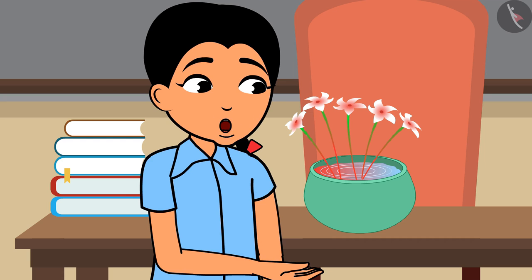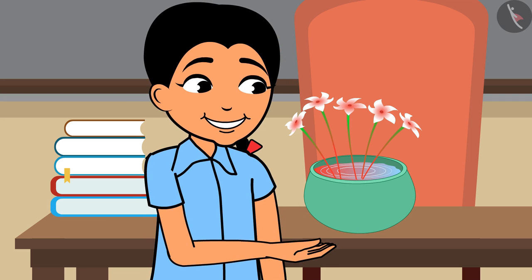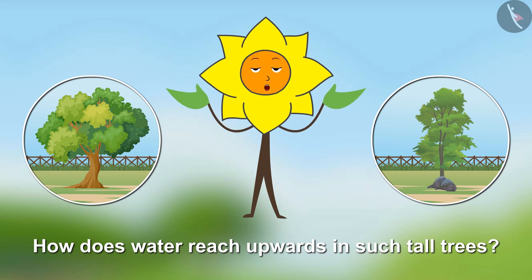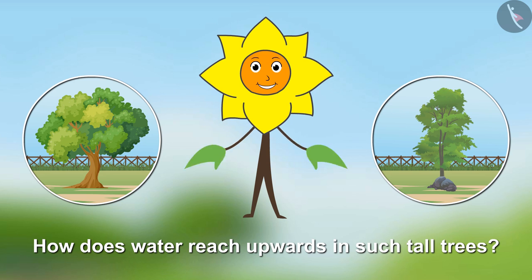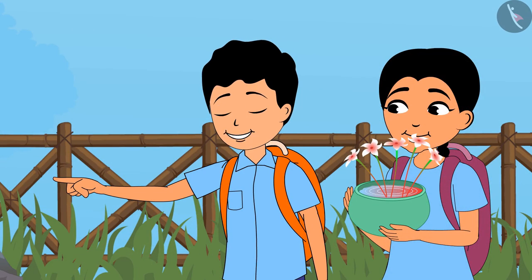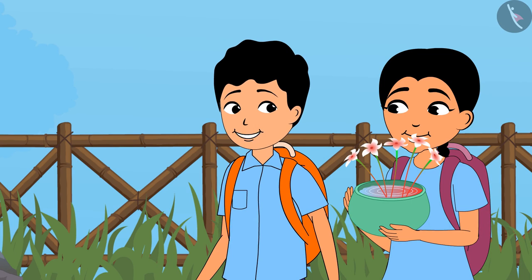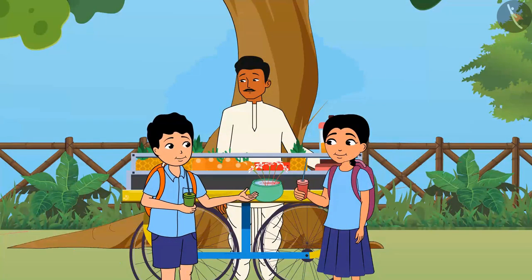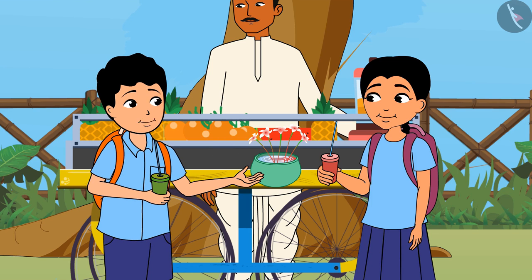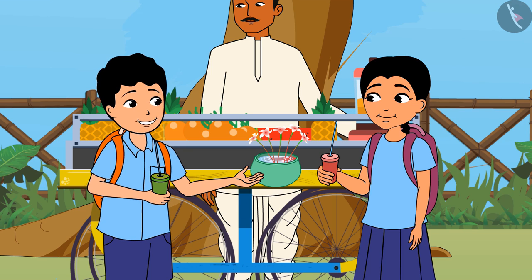Then we can go to the library and find out more information. Friends, look at these tall trees — have you ever wondered how water reaches upwards in such tall trees? Think about it. Didi, looking at this flower vase, a lot of questions are cropping in my mind. Like these flowers in the vase suck water due to the xylem in their stems, similarly what would be the process in these trees? Do they also have xylem which helps them transport water so high up?